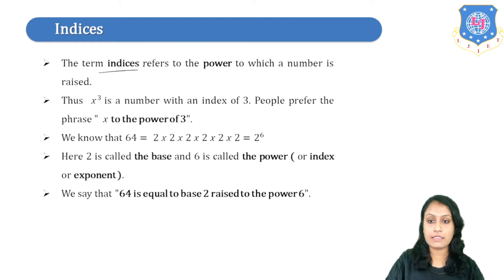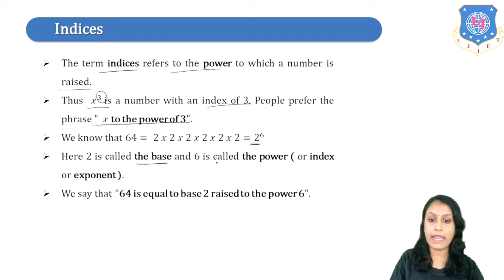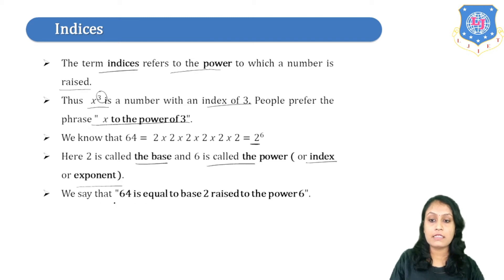The term Indices refers to the power to which a number is raised. Thus, x cubed is a number with an index of 3. We can also say x to the power 3. We know that 64 is equal to 2 multiplied 6 times, that is 2 raised to 6. So here 2 is called the base and 6 is called the power. We can also call it an index or an exponent. So 64 equals base 2 raised to the power 6.